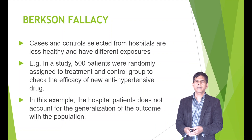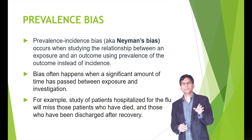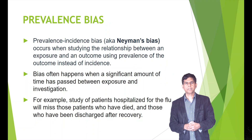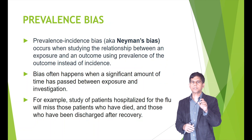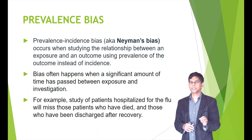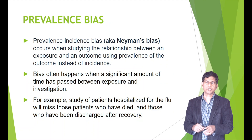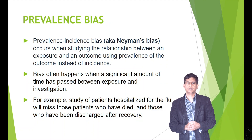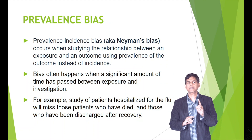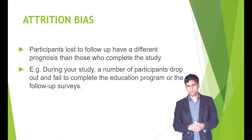What is the prevalence bias, also known as Neiman's bias? It occurs when studying the relationship between an exposure and outcome using the prevalence of the outcome instead of the incidence. This bias often happens when a significant amount of time has passed between exposure and investigation. For example, a study of patients hospitalized with the flu will miss those patients who have already died and those who have been discharged after recovery.